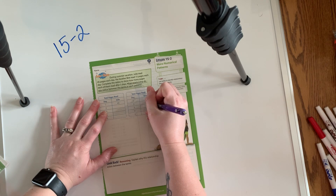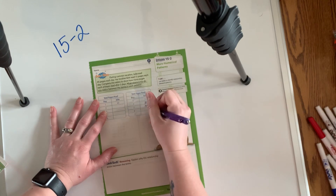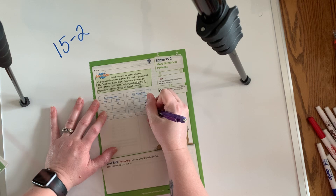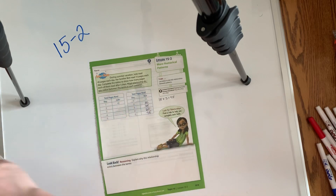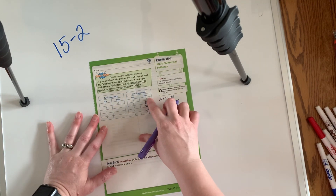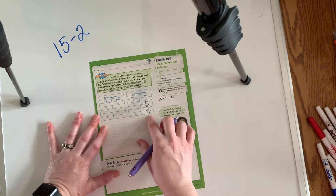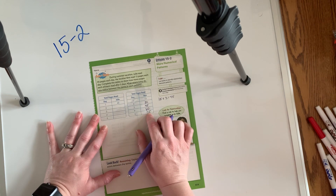15 plus 15 is 30. 30 plus 15 is 45. 45 plus 15 is 60. And then 75 is the next one. So you can see Brett's total is increasing by 15 each day.